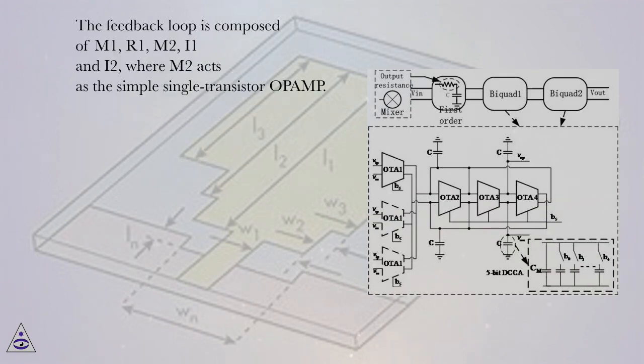The feedback loop is composed of M1, R1, M2, I1, and I2, where M2 acts as the simple single transistor op-amp.